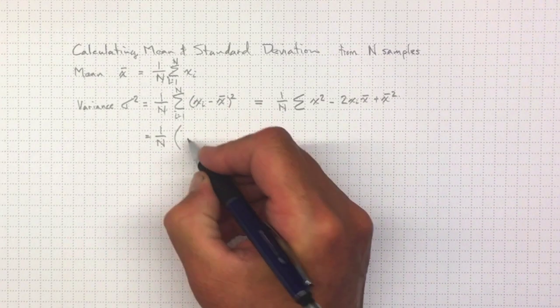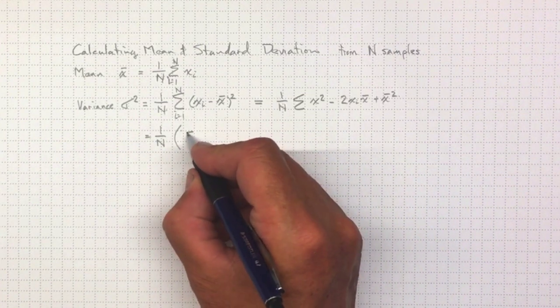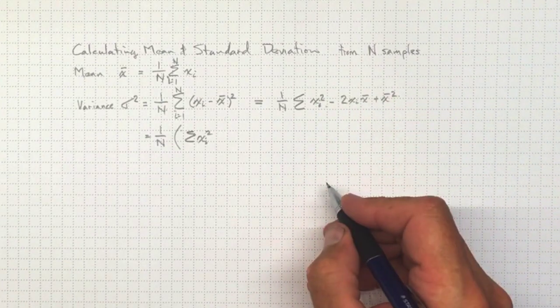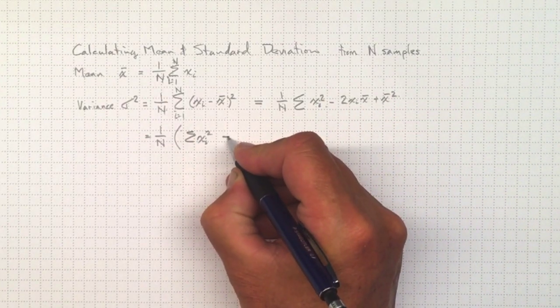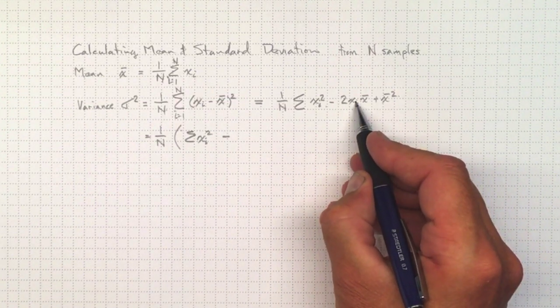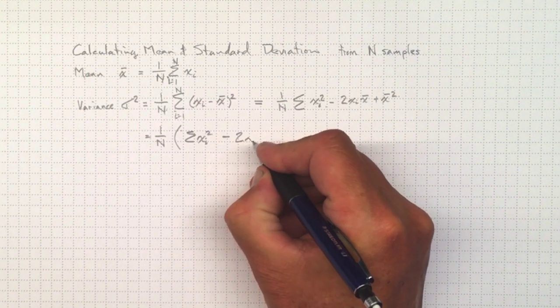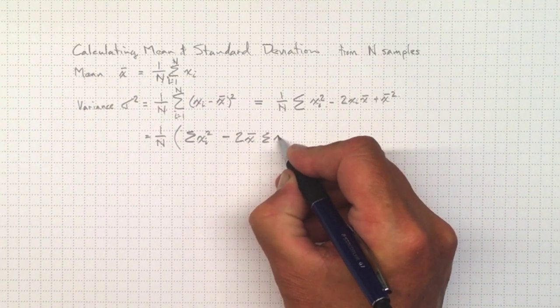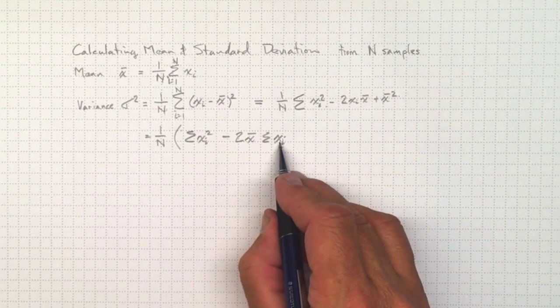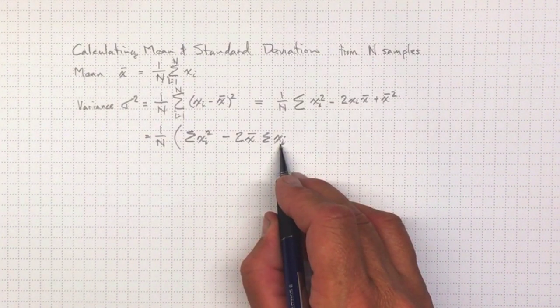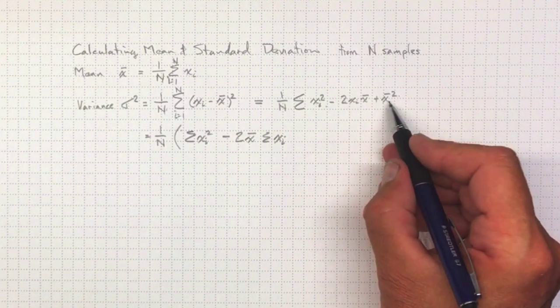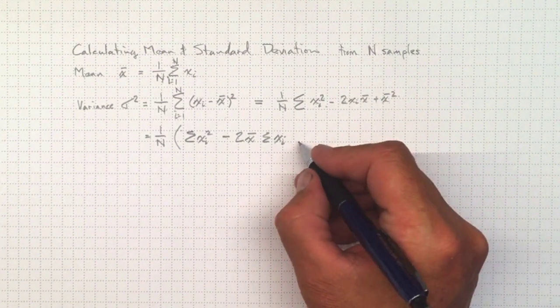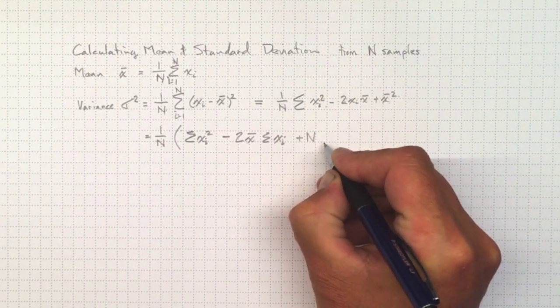If I write that again, I'll get 1 over n, and we're going to have the sum, sigma xi². Then we'll have minus 2x̄ times the sum of xi, because these are constants I can take outside the summation. But the sum of xi over n, that's just going to give us back the mean. And then we're going to have x̄², well that's the same overall n of those summations, so that's just n times x̄.